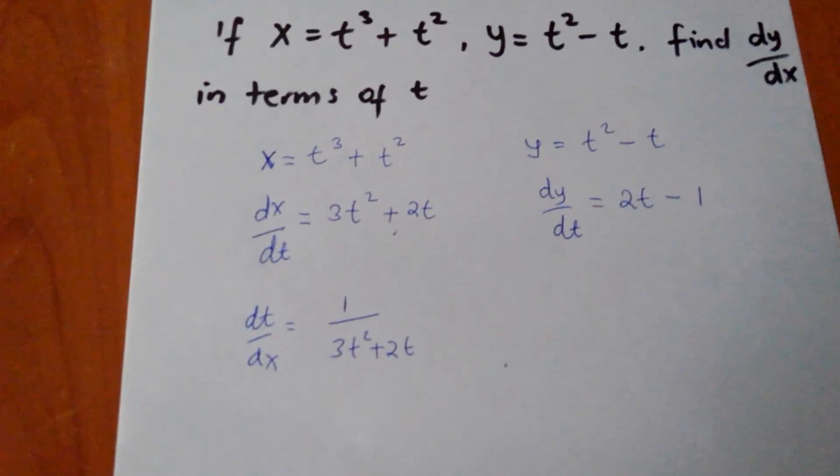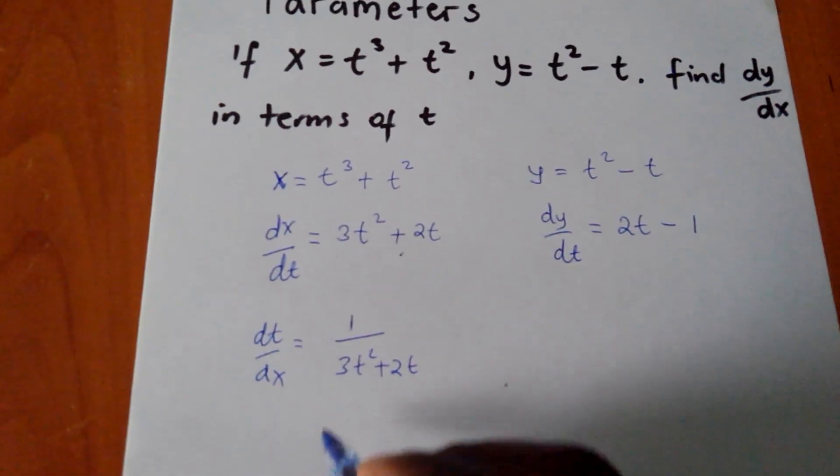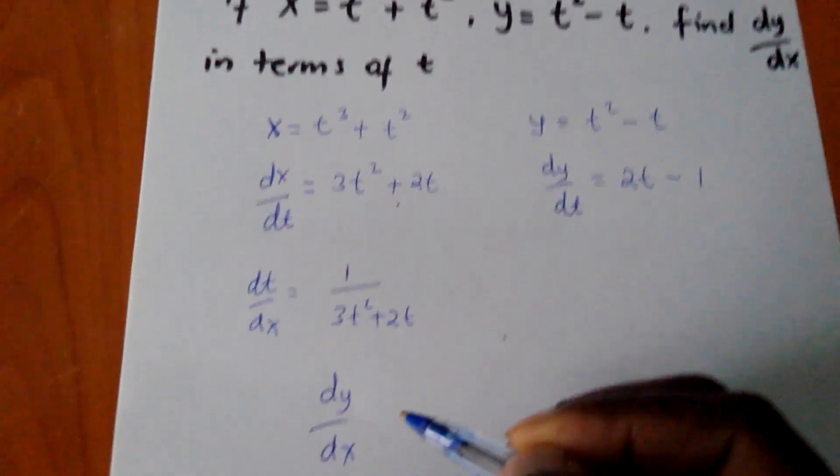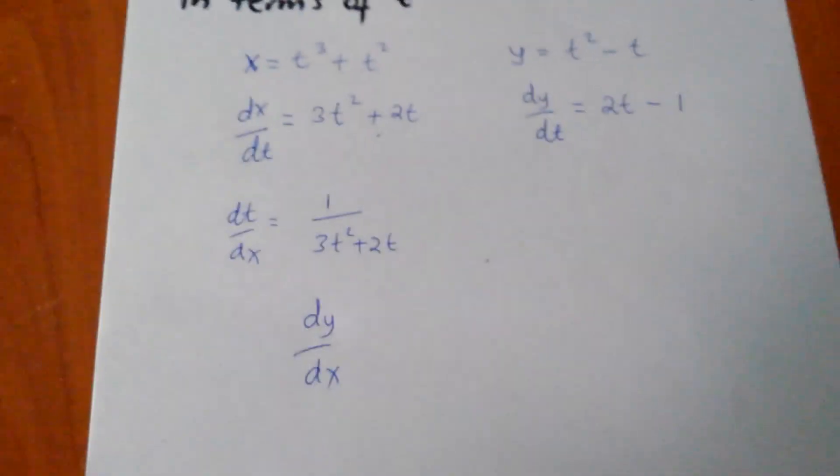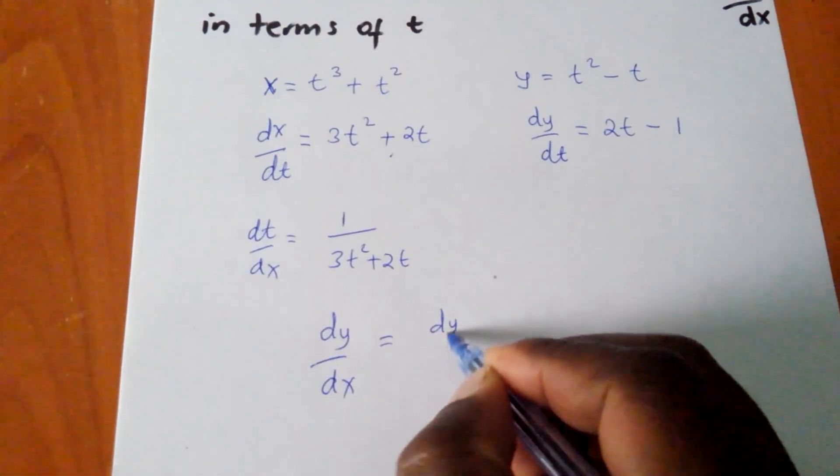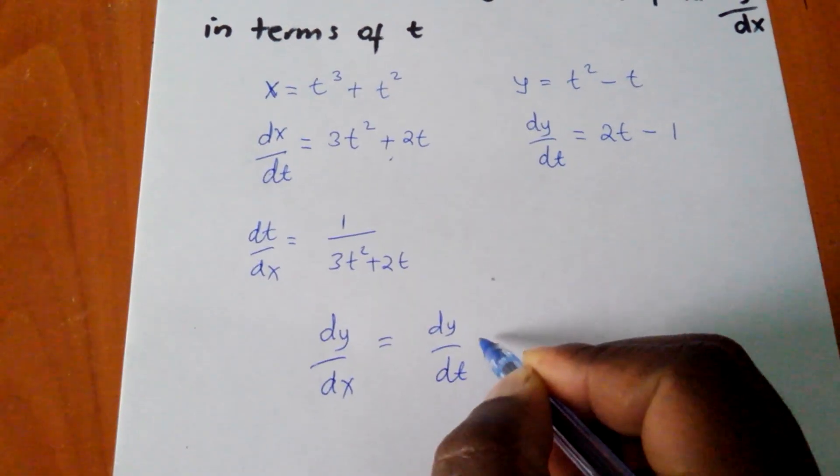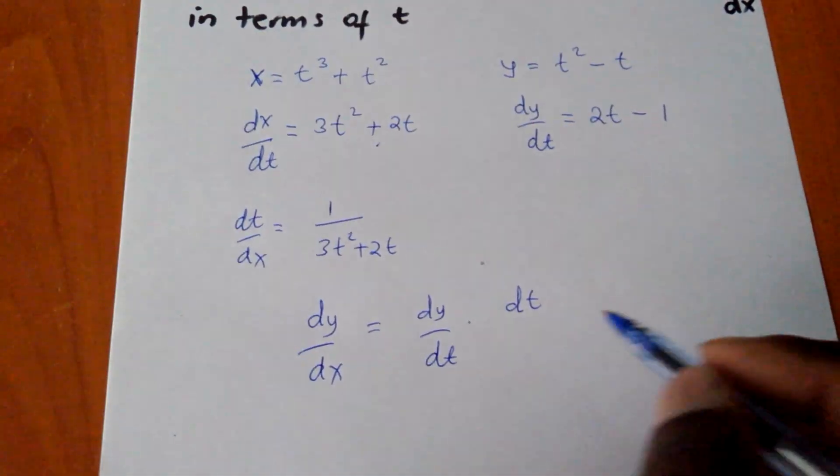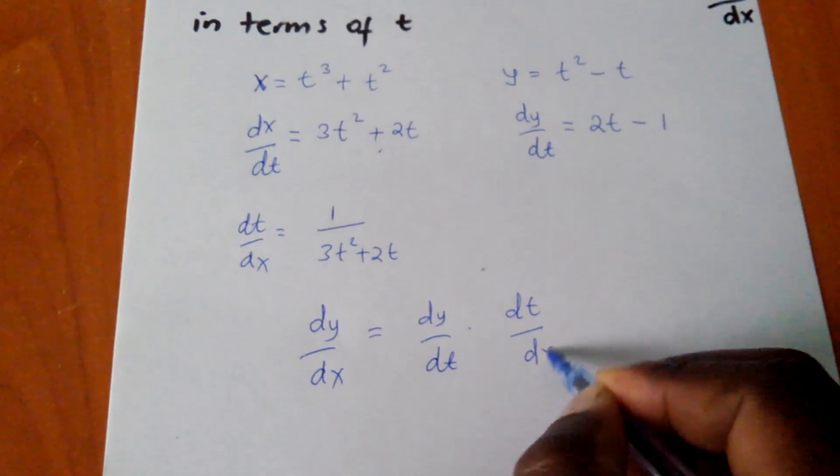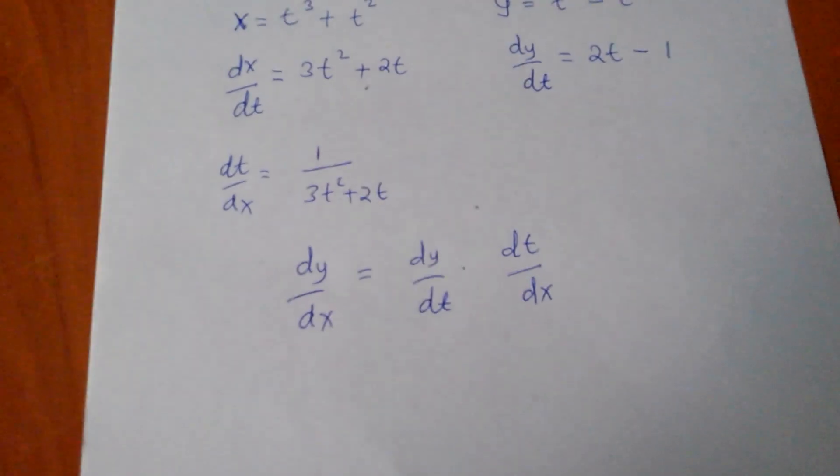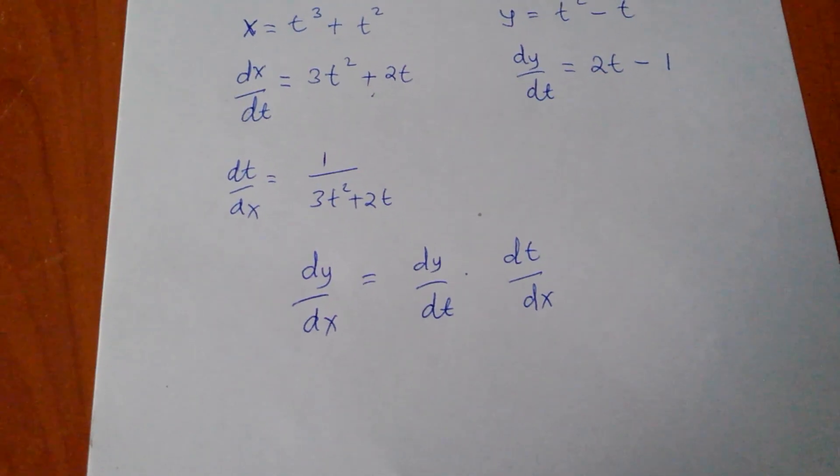Yes, we are together. So I shall bring my dy/dx, which I want to find, is equal to dy/dt times dt/dx. That is my dy/dx, if I'm to find it.